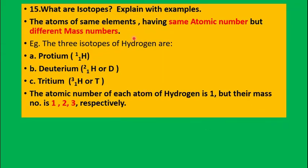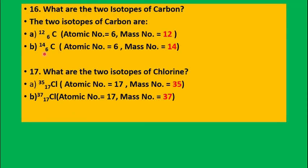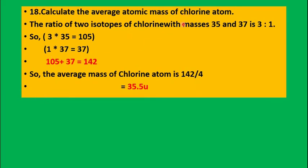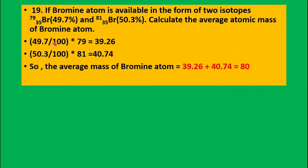Isotopes are atoms having the same atomic number but different mass numbers. Learn the three isotopes of hydrogen — protium, deuterium, and tritium — with mass numbers 1, 2, and 3. Isotopes of carbon: carbon-12 and carbon-14. Isotopes of chlorine: chlorine-35 and chlorine-37. To calculate average atomic mass of chlorine: (35 × 3 + 37 × 1) ÷ 4 = 35.5. For bromine, a similar calculation gives its average atomic mass.